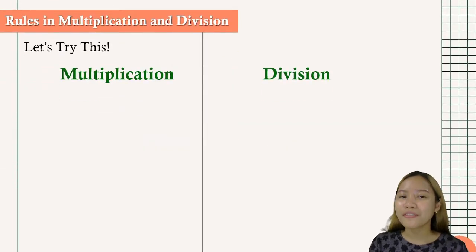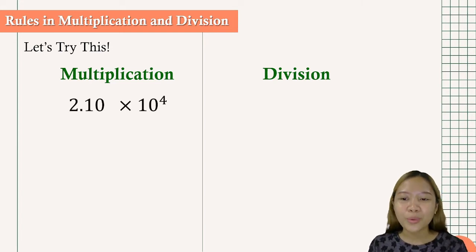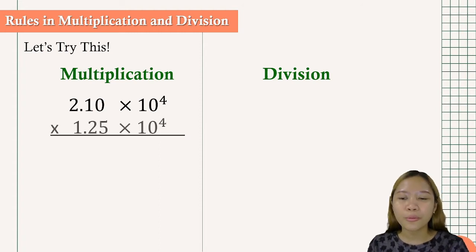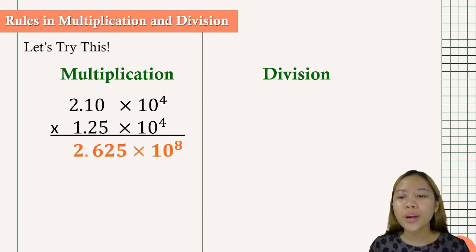So let us use these values for us to practice on how to multiply and divide. We have here 2.10 times 10 to the 4 will be multiplied by 1.25 times 10 to the 4. Just simply multiply the coefficients and then add the exponents. So we have 2.625 times 10 to the 8.